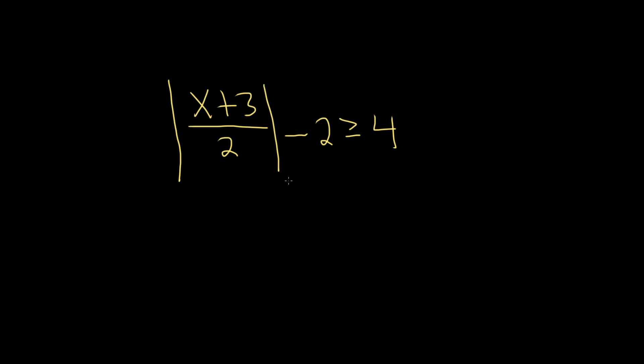The first thing you want to do when solving anything with absolute value is to isolate the absolute value. In this case, it's not too bad because we just have to get rid of this minus 2. So we'll add 2 to both sides, plus 2, plus 2. This leaves us with the absolute value of x plus 3 over 2, and that's going to be greater than or equal to 6.